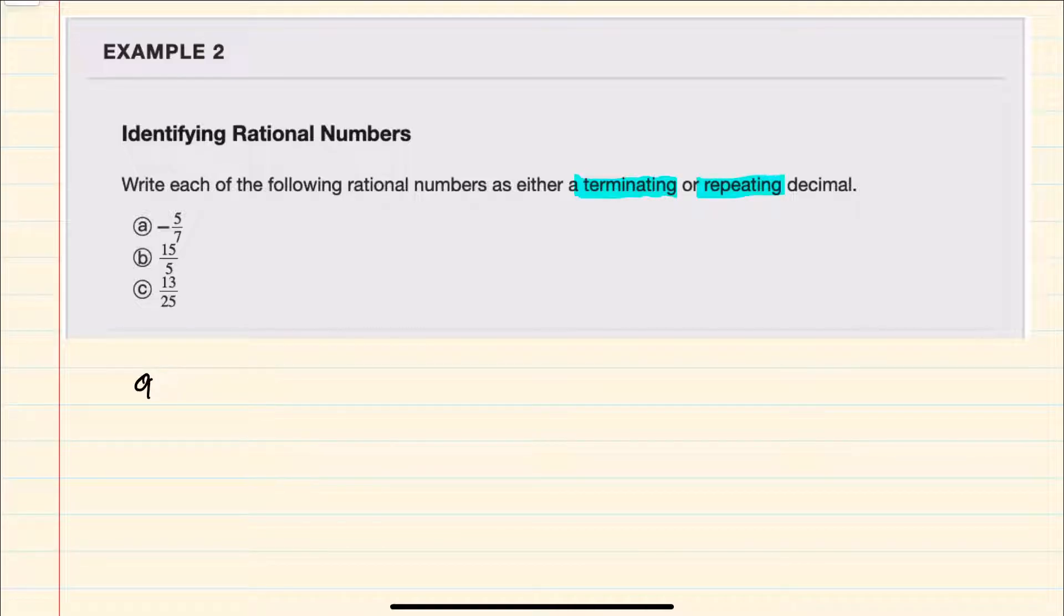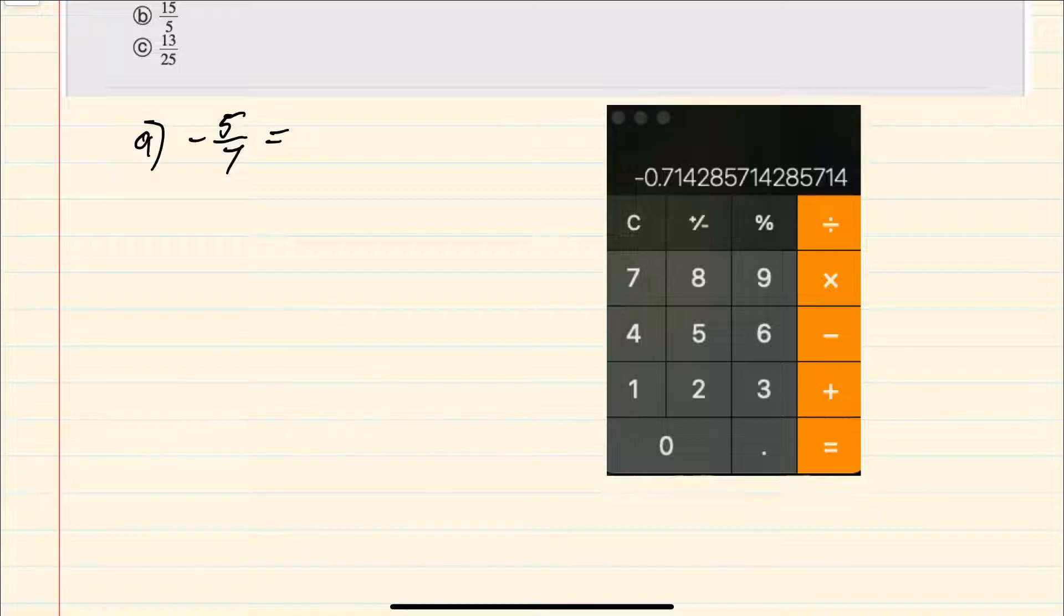And our first example here, a, is negative 5 sevenths. If we use a basic four-function calculator and enter negative 5 divided by 7,